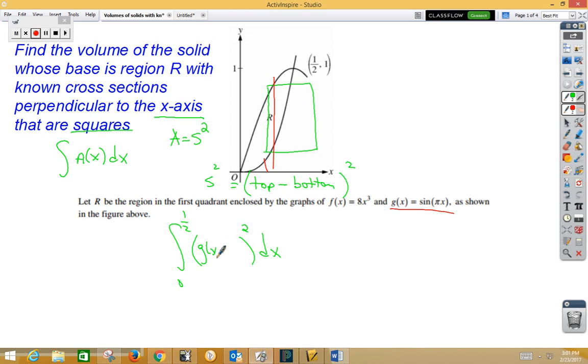So we would have g of x minus f of x quantity squared dx. And that's our setup. From there, if it was a by-hand problem, then we would integrate by hand. If it's a calculator problem, we would throw it in our calculator using math 9.